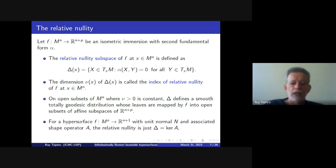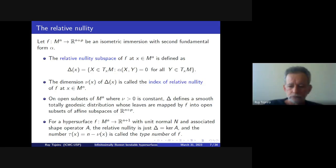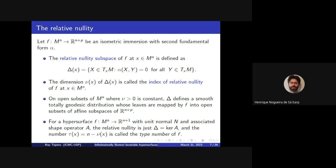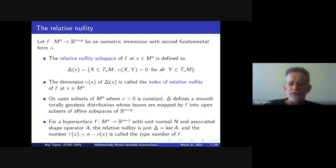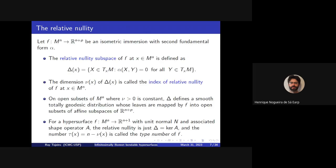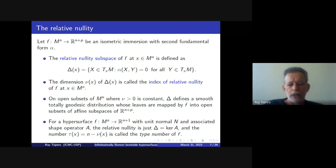For a hypersurface, the relative nullity subspace is the kernel of the shape operator at that point. As for local constancy: the index of relative nullity is a lower semi-continuous function, so on an open dense subset of each connected component it is constant. The difference between n and the index of relative nullity is the type number of the hypersurface, which is the rank of the shape operator.